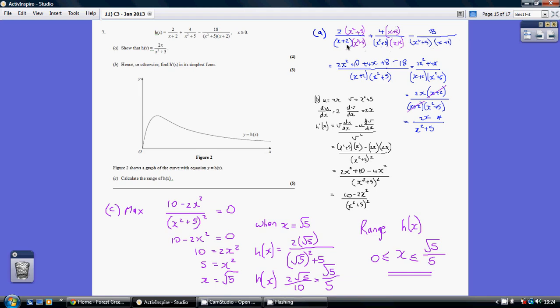This gives us the same denominator throughout, so we can combine it into a single term and the three numerators all go in together. Expanding this, we get 2x squared plus 10 plus 4x plus 8 minus 18, all of that combines to make the numerator.